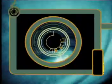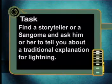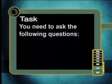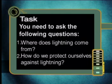This brings us to the end of our series on electrostatics. But before I go, here's one last task for you. Find a storyteller or a Sangoma and ask him or her to tell you about a traditional explanation for lightning. You need to ask the following questions: Where does lightning come from? How do we protect ourselves against lightning? Try to arrange to present your findings to your class in the form of a short oral presentation. Join us again soon for some more exciting physics topics here on MindsetLearn. Goodbye!